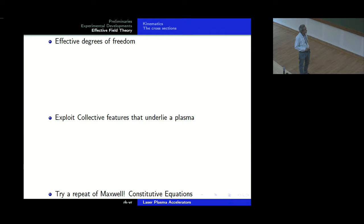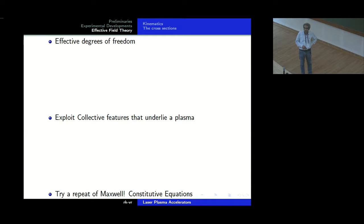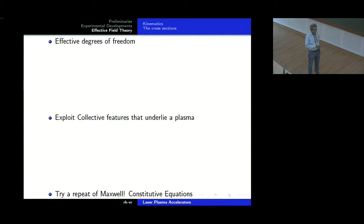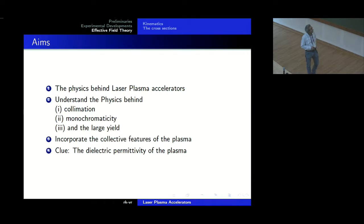We need effective degrees of freedom which incorporate collective features of the plasma. The idea is that we try a repeat of what Maxwell did. Maxwell not only gave us equations in free space, which we celebrate quite a lot, but he also gave the constitutive equations — the permittivity and the permeability. He did a large number of experiments to determine them. Constitutive equations give us a lot of insight. What we want to do is try to repeat what Maxwell did in this context — that is what we wish to do.